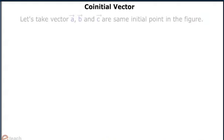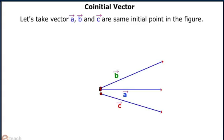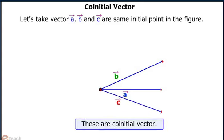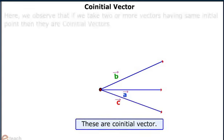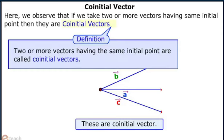Let us take three vectors: A, B, and C. Initially, A and B have the same initial point but C has a different initial point. Thus, A, B, and C vectors are not co-initial vectors. When A, B, and C vectors have the same initial points as shown in the figure, then they become co-initial vectors.